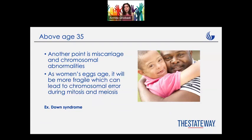After age 35, the possibility of having a miscarriage or any sort of chromosomal abnormalities may increase. As shown, after that age the egg doesn't have as much supply, so it is more fragile. During reproduction phases like mitosis or meiosis, there may be mutations causing abnormalities such as Down syndrome or other genetic syndromes, even autism. So prenatal screening is important for all women, especially those above age 35.